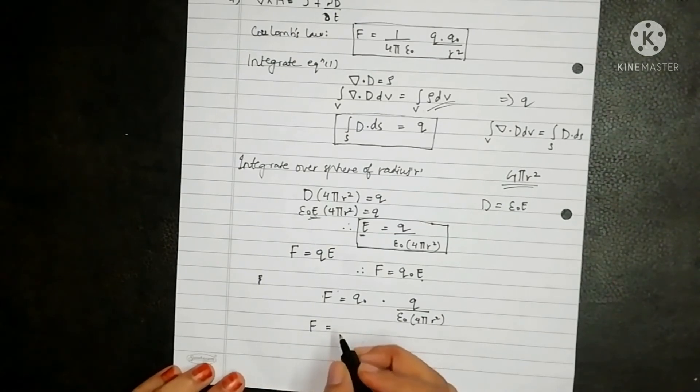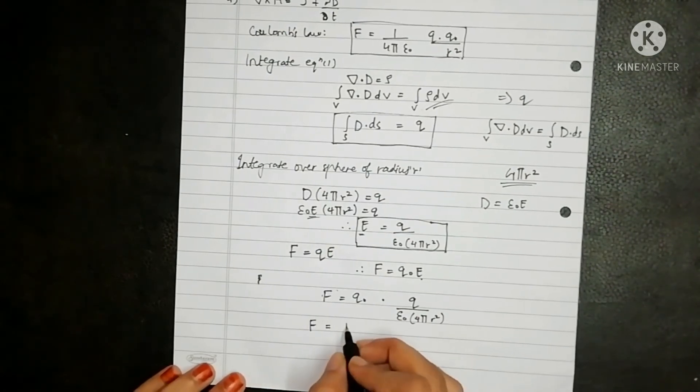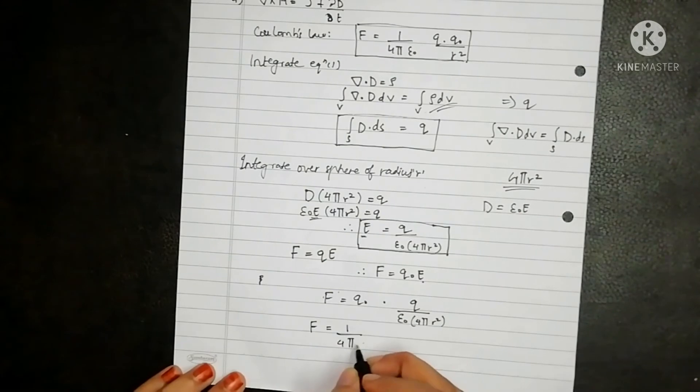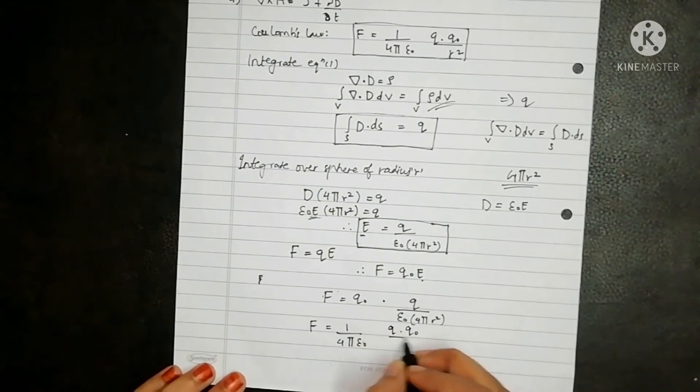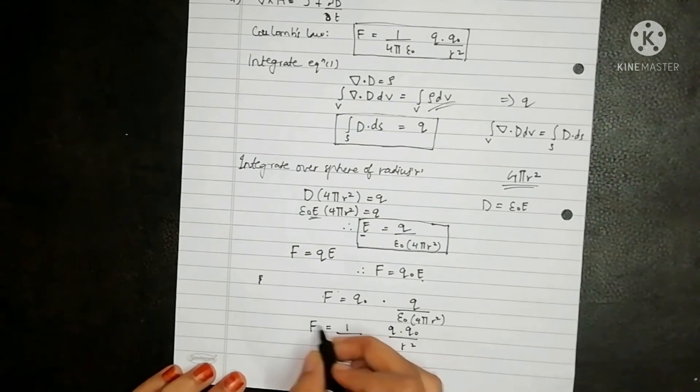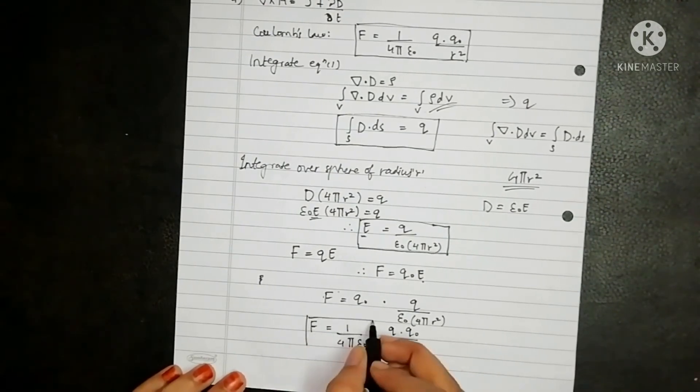So F is equal to 1 upon 4 pi epsilon naught Q into Q naught upon r square, which is nothing but Coulomb's law.